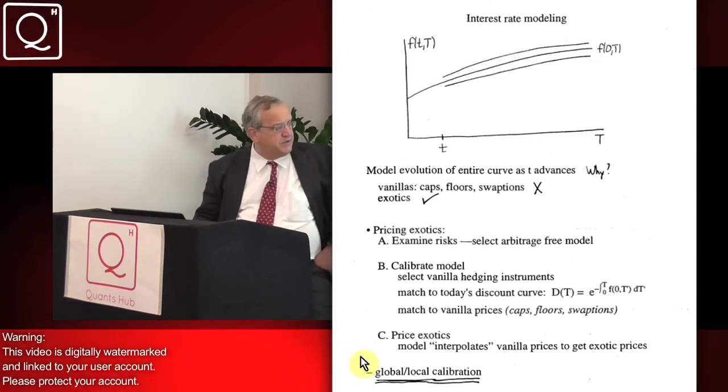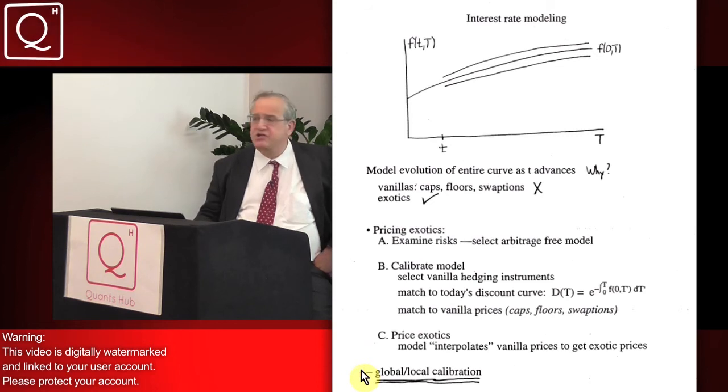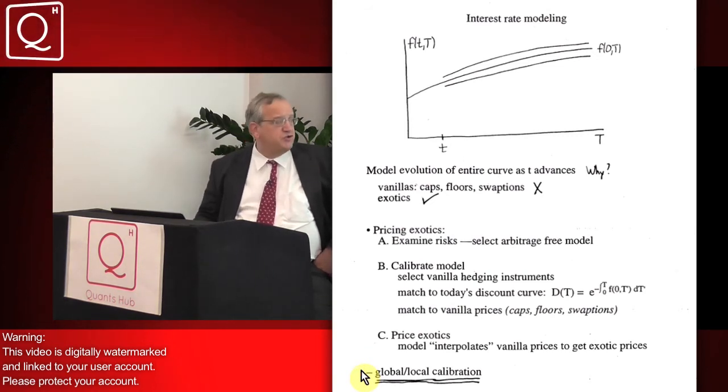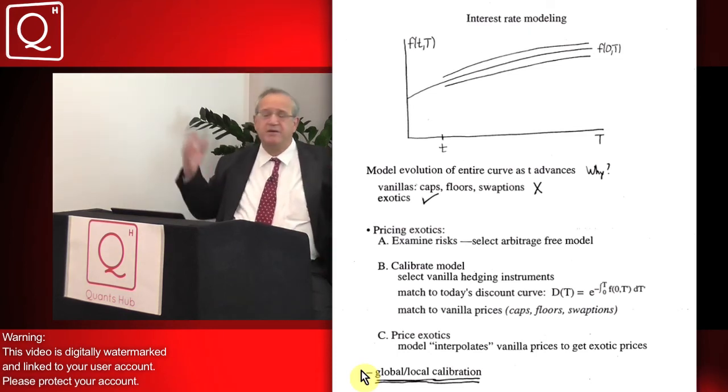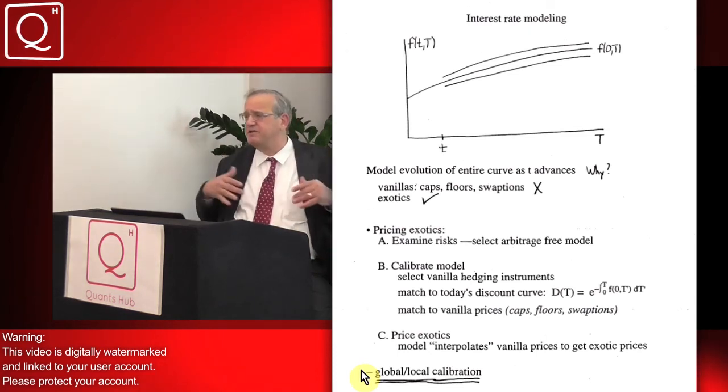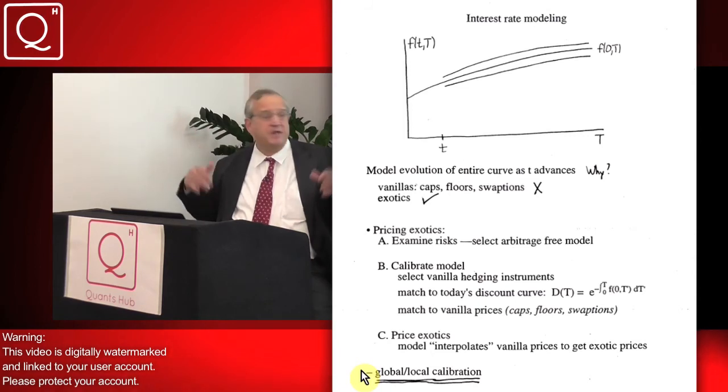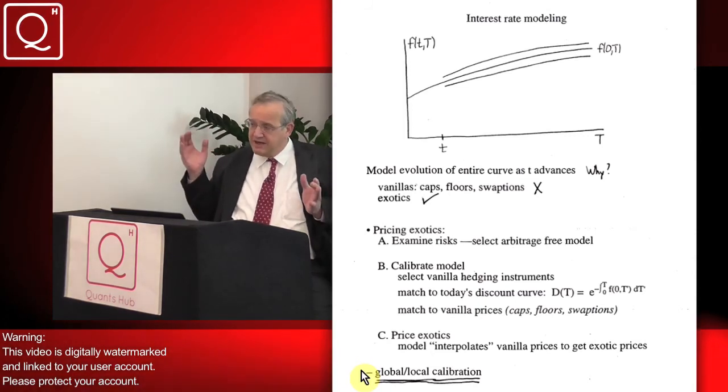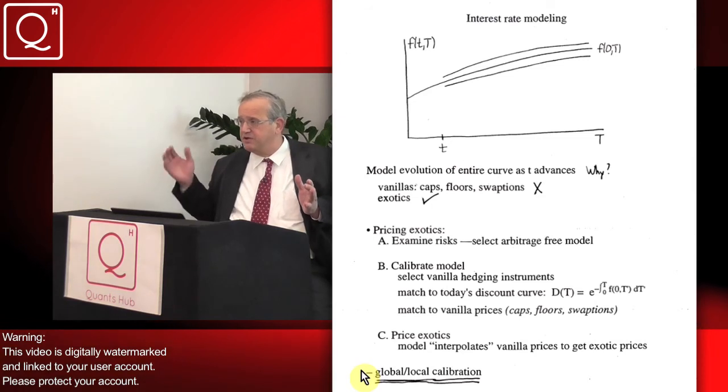And so that brings us to the big strategic decision: do you use global calibration? That is, you calibrate against lots and lots of instruments, usually a fairly complicated model, and once you calibrate it, use that calibrated model to price each instrument in your book.